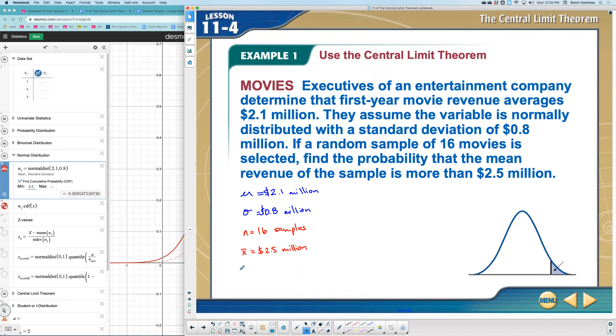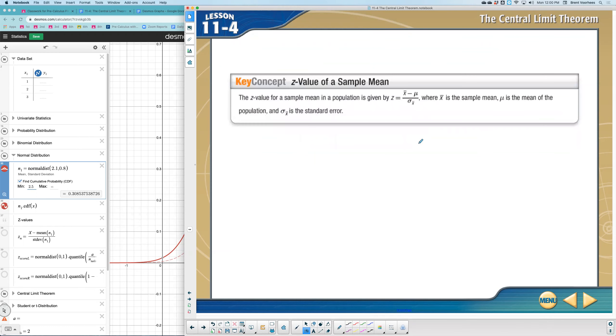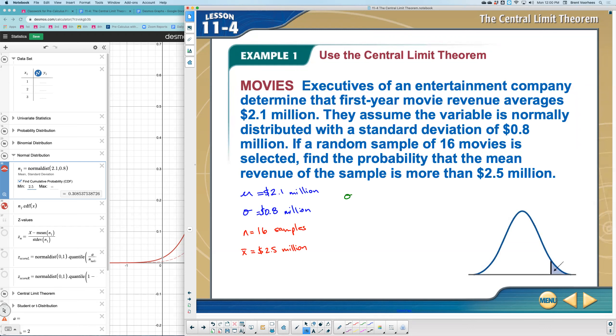What are the formulas we just saw on the previous pages? The first told us we could find the standard deviation for a set of samples using this formula. So I'm going to come over here and say the sample standard deviation or standard error would be the original standard deviation divided by the square root of n. This is the formula I'm using right here, which means I would have 0.8 divided by the square root of 16, which is 4. So 0.8 divided by 4 is 0.2.